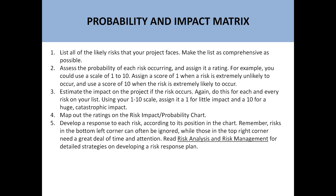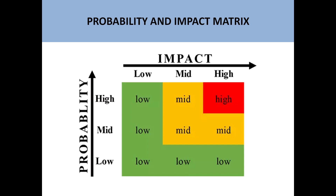Estimate the impact on the project if that risk occurs. Again, use the same 1 to 10 scale — assign a 1 for little impact and a 10 for huge catastrophic impact. Then map out the ratings on the risk impact probability chart, and develop a risk response for each risk according to its position in the chart. This is basically the overall approach.